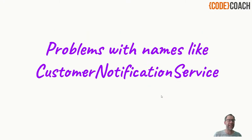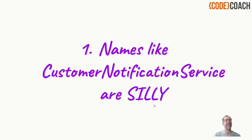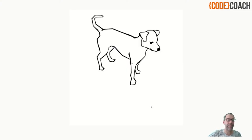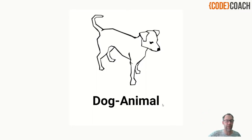What might be some of the problems that come with naming a class customer notification service? It's a little bit silly to name a class customer notification service. Why might that be? What is this? How about it's a 'dog animal'? Well, that's nonsensical. We know it's an animal — a dog's an animal. We should just name it dog. Let's be more specific — this is a specific dog, it's a border collie. What if we were to say 'border collie dog'? Ridiculous. It's a border collie.